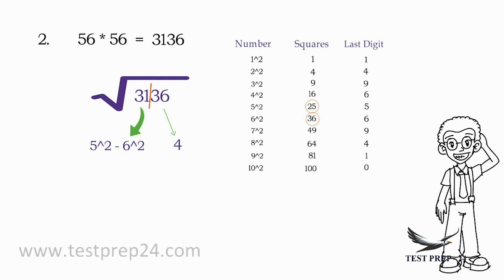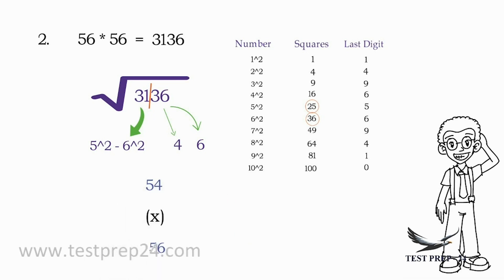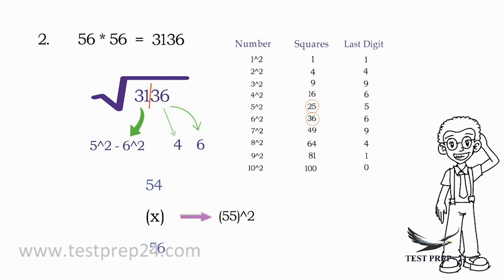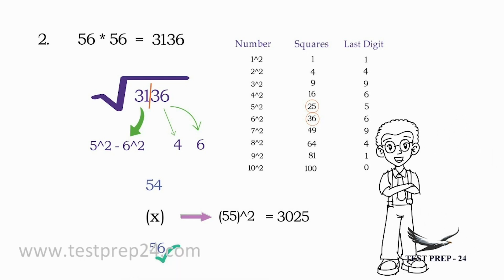For the second part 36, the last digit is 6, so the possibilities are 4 or 6. The answer is either 54 or 56. Take the in-between number: 55 squared. 5 multiplied by its immediate next number 6 gives 30, so 55 square is 3025. The question value 3136 is greater than 3025, so the answer is 56.